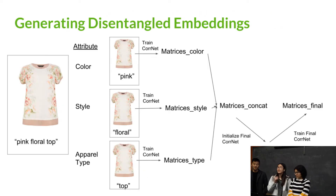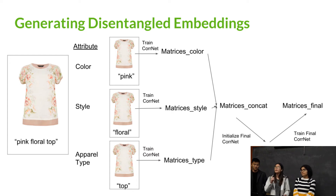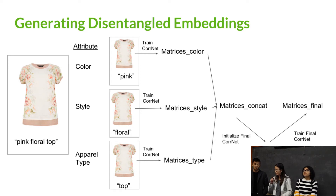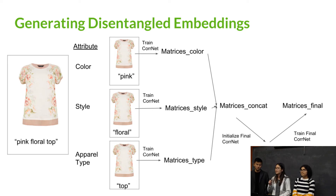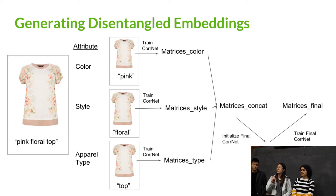From a paper we read, we learned that it is possible to combine both text data and image data into a common space where the embeddings are disentangled based on important attributes. In the paper, they were using clothing data where they had images of clothing along with the description of the article of clothing. They picked three different attributes relevant to each data point — such as style, apparel type, and color — and trained three different embeddings for these three attributes. To get an embedding for one attribute, they used the entire image and just the text corresponding to that attribute, such as the word 'pink' in that example.